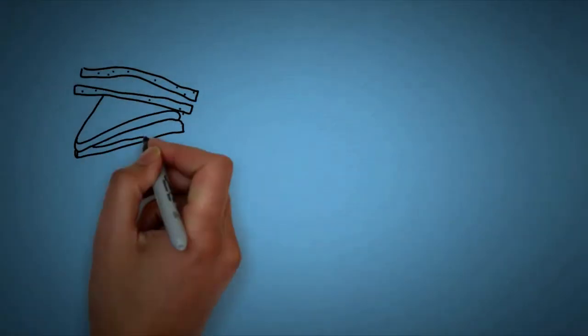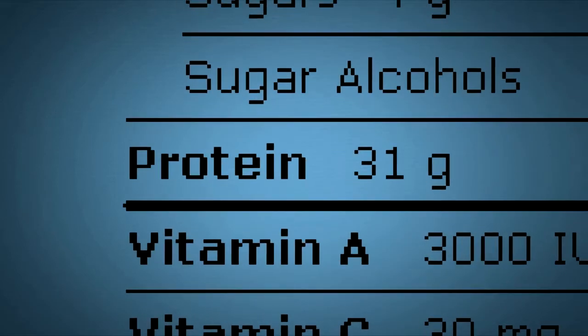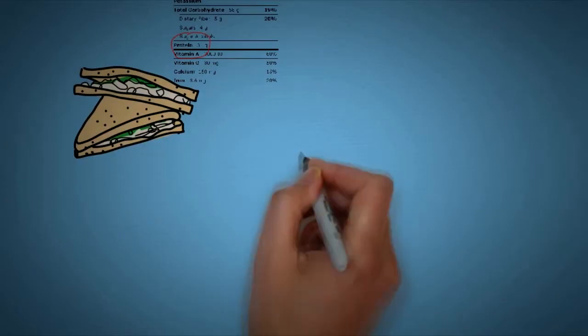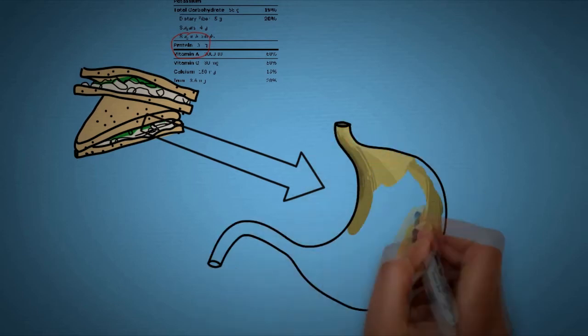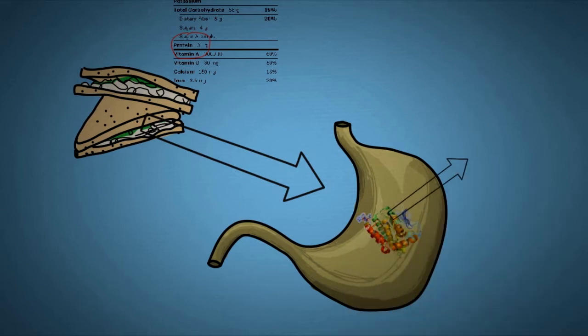This is a perfectly drawn tuna sandwich including the nutrition facts. This tuna sandwich actually consists of different components. One of them, protein, starts getting digested in your stomach. Following the digestive tract, the protein, at first three-dimensional, gets cut down into its key components, the amino acids.